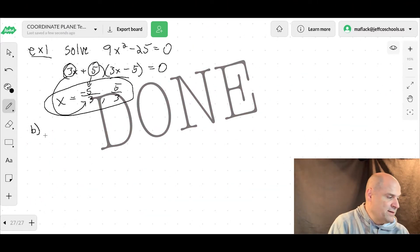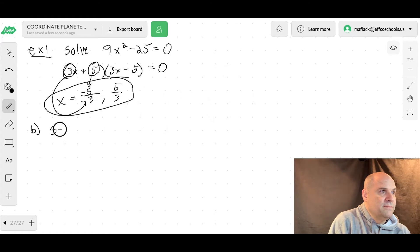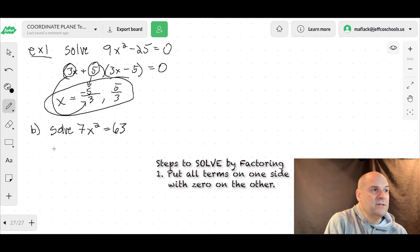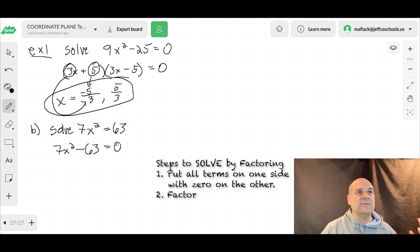Here's B. Solve 7x squared equals 63. Well, the first step to solving by factoring is make sure they're all on the same side first. So we're going to put 7x squared minus 63 equals zero. Now we're going to solve by factoring. So now we're going to follow the steps to factoring. Okay?